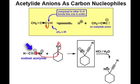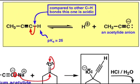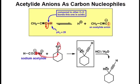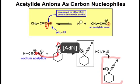Acetylide anions are also great carbon nucleophiles, and can form propargylic alcohols upon addition to carbonyl groups. You'll recall from our discussion of hybridization that the CH bond of a terminal acetylene, such as the one shown here, is considerably more acidic than CH bonds built from SP2 or SP3 orbitals. The reason for this is because the lone pair of the conjugate base is in a relatively stable SP orbital. Although these are relatively stable anions, they're still quite reactive and can add into carbonyl groups in an addition-type process to generate alcohols such as the one shown here.